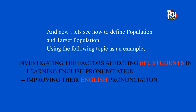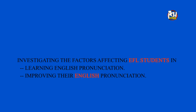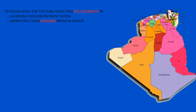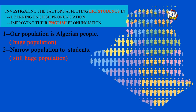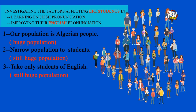To understand this lesson, let's consider this example: investigating the factors affecting EFL students in improving their English pronunciation. Taking Algerian people as a starting point, the number is huge and we are not interested in all people, so we narrow the population only to students — our first variable — which in fact number over 2 million. We then narrow further to students of English as a second variable, since we are not interested in other students. This becomes our population, but the number is still huge.